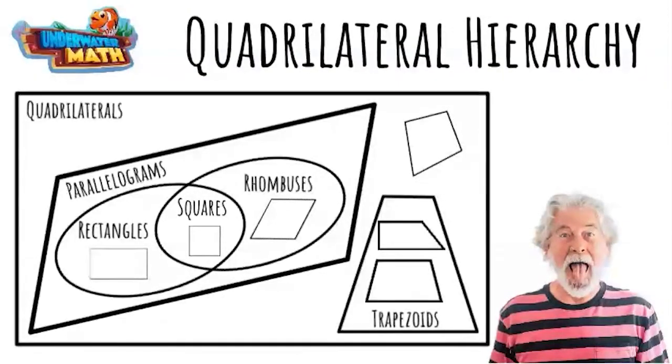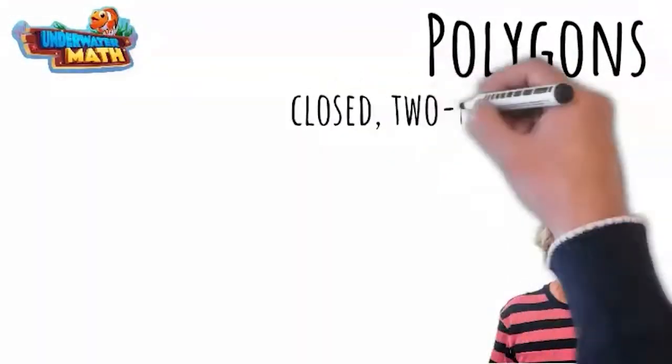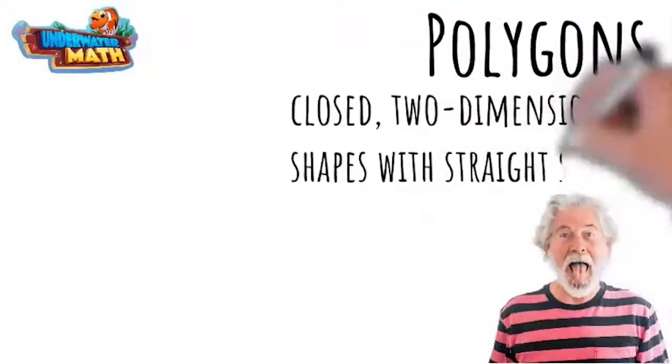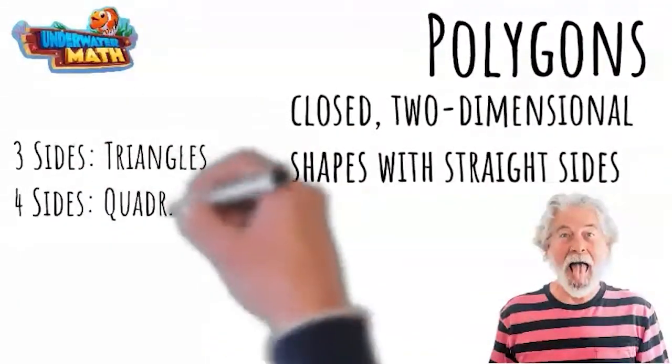I think that about sums it up. Now you know what to look for when you're fighting off those polygons. Always be on the lookout. They could attack any time.